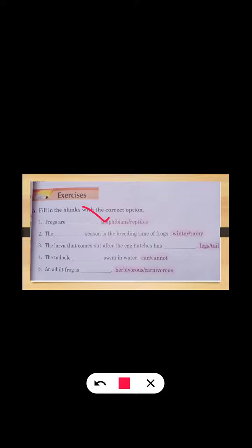Third one is: The larvae that comes out after the egg hatches has [blank]. The answer is tail. Fourth one is: The tadpole [blank] in water. The tadpole can swim in water, so the answer is can.